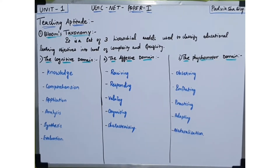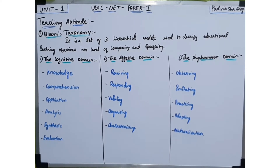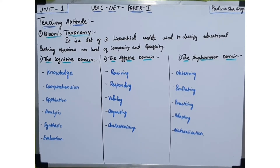If we recall something and can tell it back, that is knowledge. The next category is comprehension — the ability to understand the meaning of what is known. For example, a teacher explains a theory in his own words. When a teacher explains something using their own words rather than just repeating it, that is comprehension.